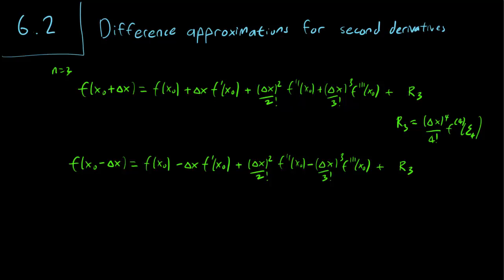Well, not exactly — we have a tilde. We want r3-tilde to equal delta x to the 4th over 4 factorial. That remains the same because it's a square, times f4 of zeta4-tilde.